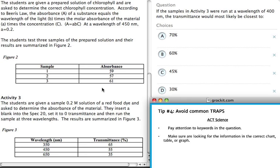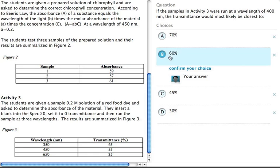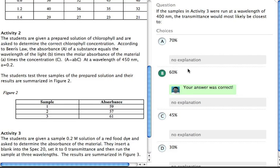So the value we're looking for is 400 nm. And taking a look at our chart, we have 350 and we have 450. So halfway in between is going to be between 55 and 65. Exactly halfway between 55 and 65 is 60. We confirm our answer and we're 100% correct.